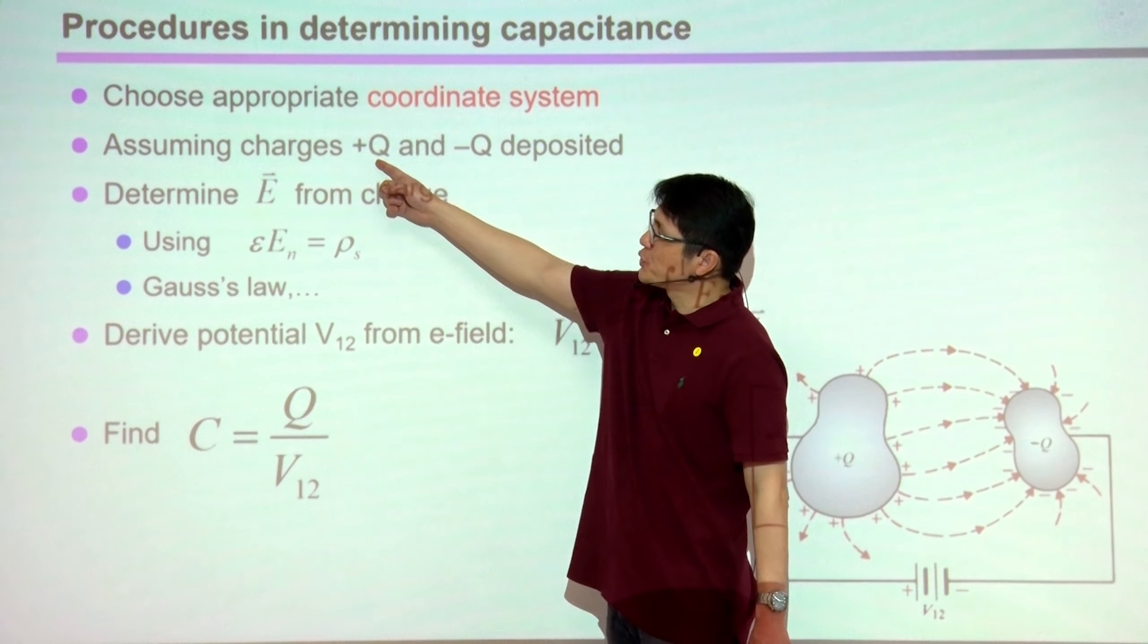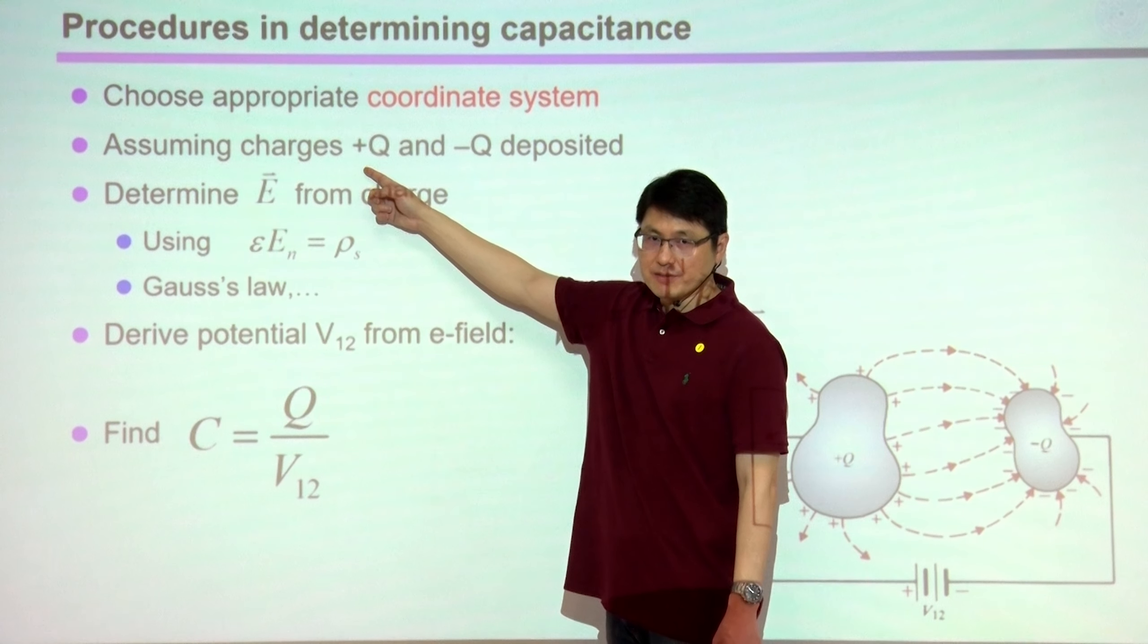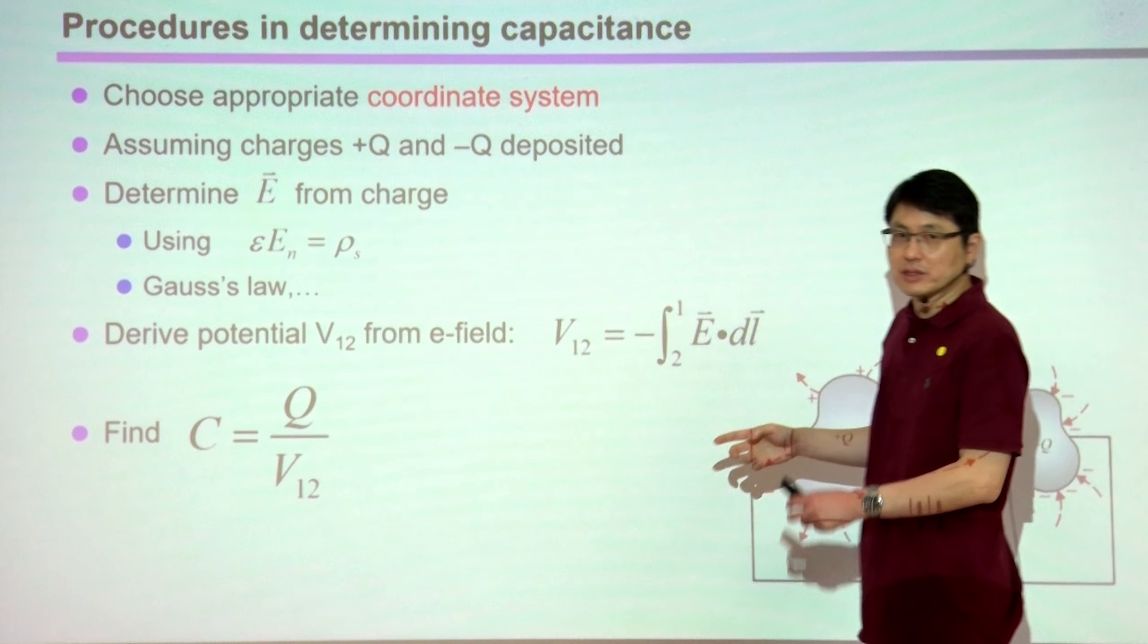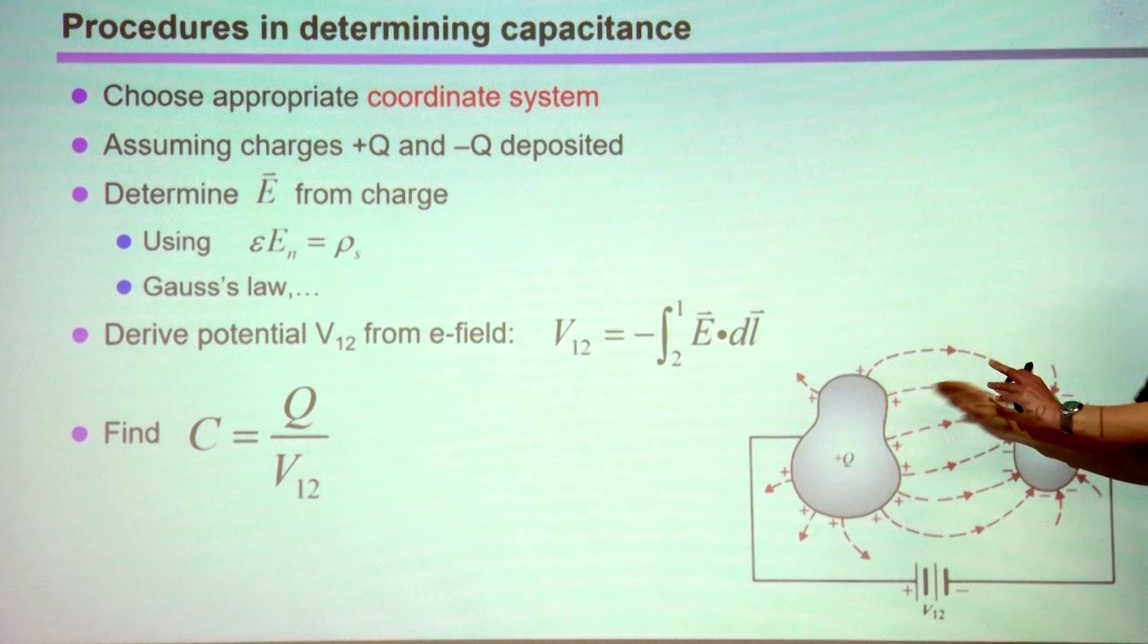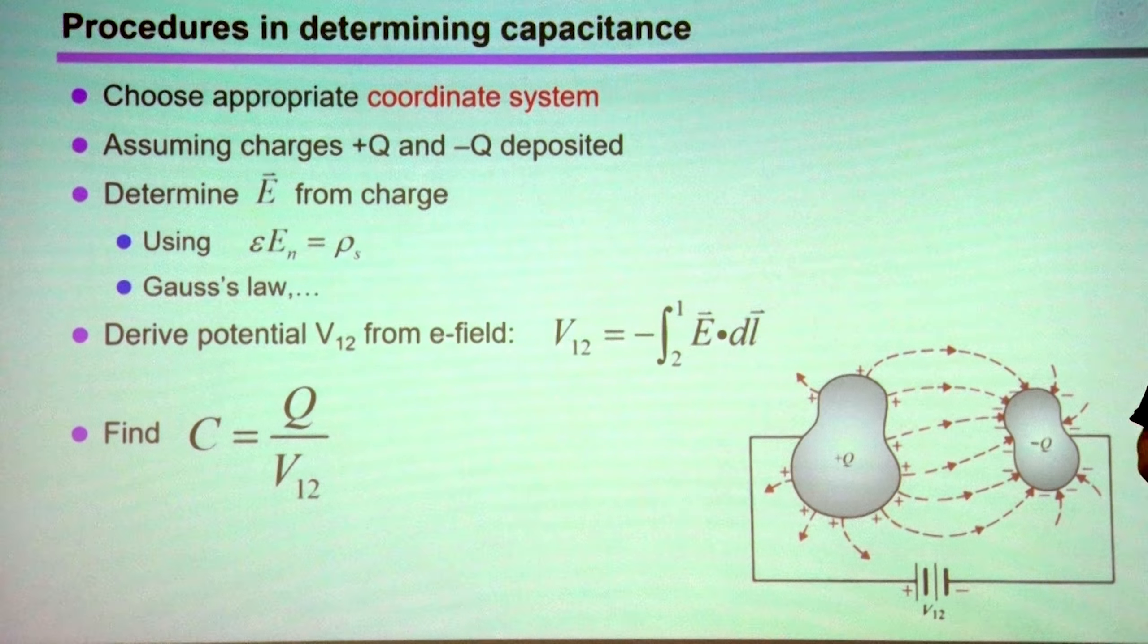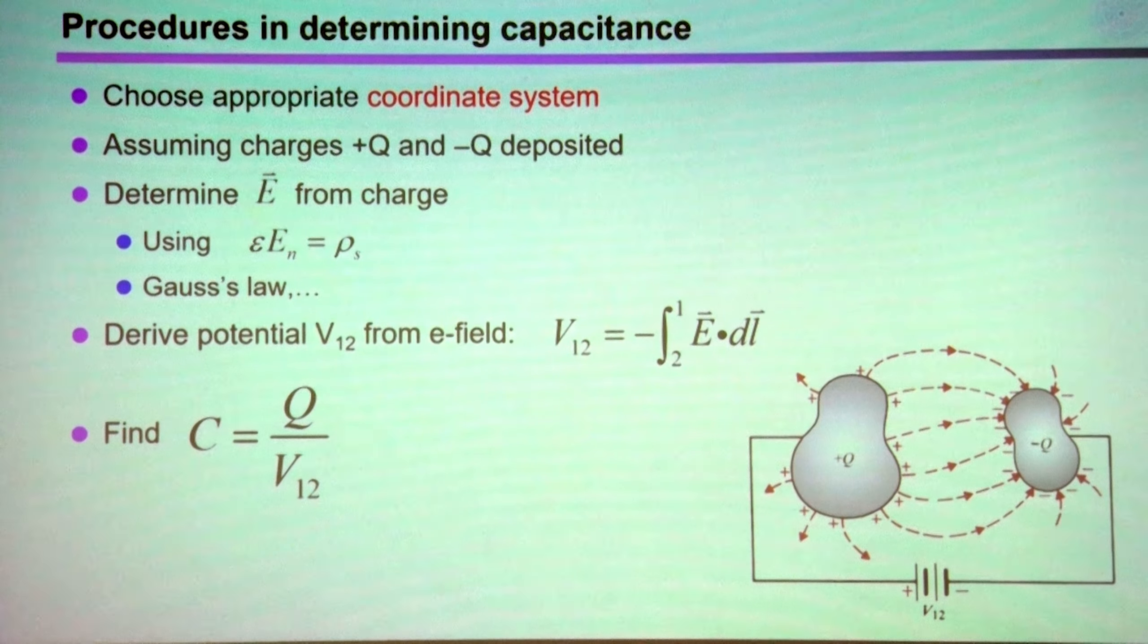Then we can assume positive charge Q and negative charge Q are deposited over the two conductors, respectively. We need to maintain charge neutrality, so charge needs to be neutral.